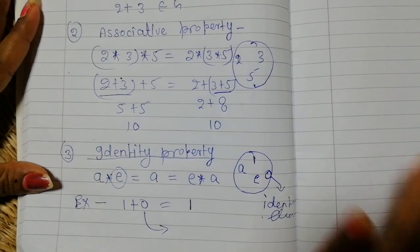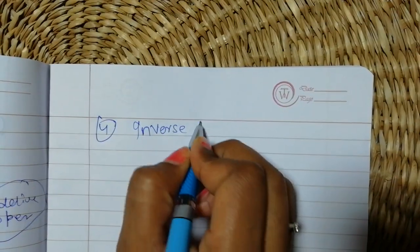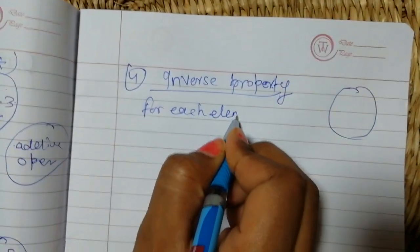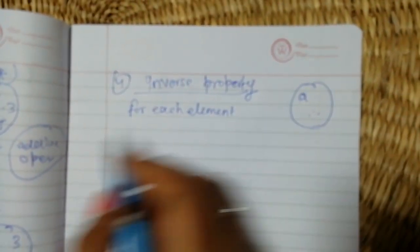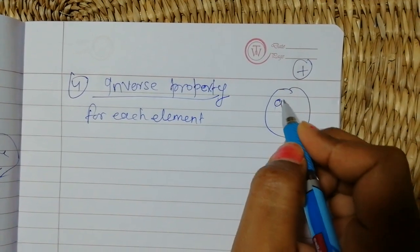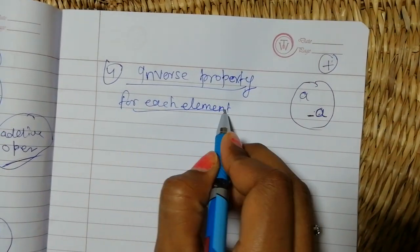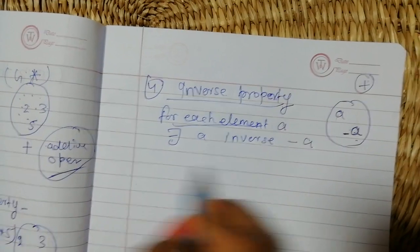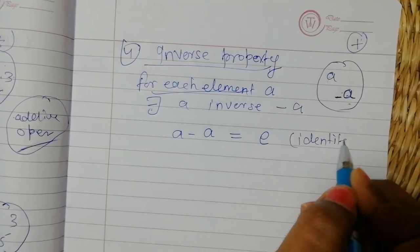Next property is inverse property. In this property, for each element there exists an inverse element. When we apply the additive property plus, for each element a the inverse element is minus a. So for each element a, there exists an inverse element minus a. When we operate a with minus a, it equals the identity element.